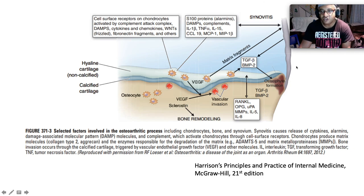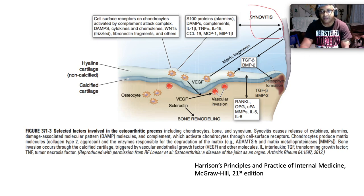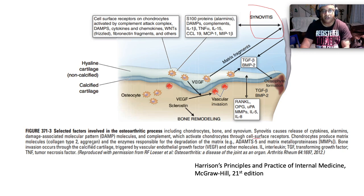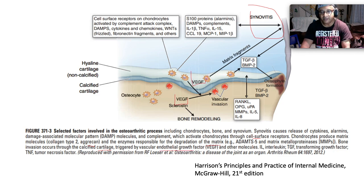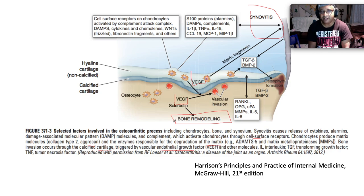The pathophysiology of OA involves chondrocytes, bone, and synovium. Synovitis causes release of cytokines, alarmins, and DAMPs — damage-associated molecular proteins and complement — which activate chondrocytes through cell surface receptors. Chondrocytes produce matrix molecules such as collagen type 2 and aggrecan, and enzymes responsible for matrix degradation, including ADAMTS5 and matrix metalloproteinases. Bony invasion occurs through vascularization of cartilage triggered by vascular endothelial growth factor. Interleukins, transforming growth factor, and tumor necrosis factor are all implicated. Bony remodeling underpins many of the nodes found in OA.